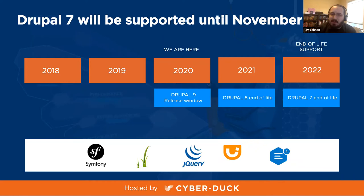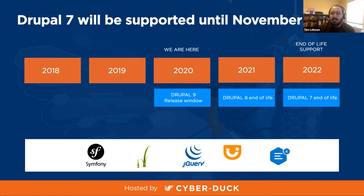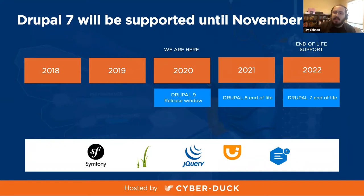I want to briefly touch on some news that actually just came out yesterday — this slide has just changed overnight. Many of you out there might be on Drupal 7, which was originally scheduled for end of life in November 2021. We have just announced that the Drupal security team and core maintainers are extending support for one more year. This extension doesn't mean we should procrastinate on upgrades to get to Drupal 9 — it's there to provide a little extra breathing room and more support from the community to help update the migration path from 7 to 9. I would still strongly encourage you to work on this update as soon as you can.